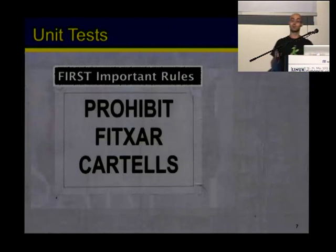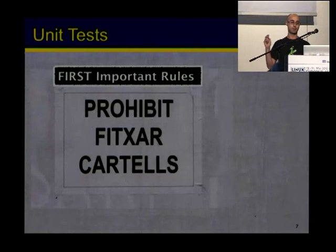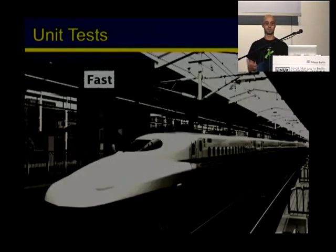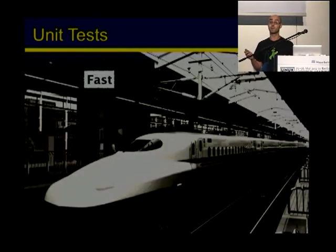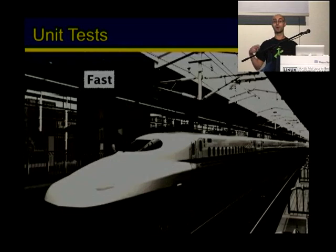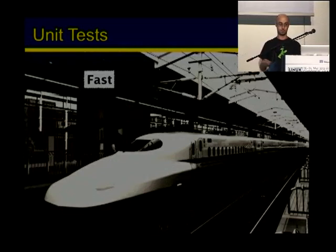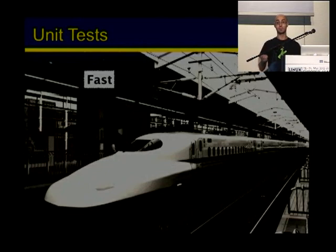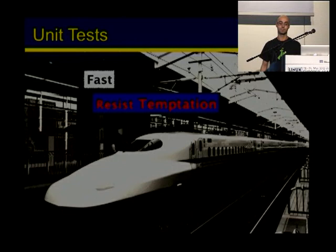To write unit tests effectively, you must follow the FIRST rule. Your tests must run fast. If they are fast, you will run them more often, so you will receive feedback more often. Your tests will be fast if you resist the temptation to access the database, network, or file system.